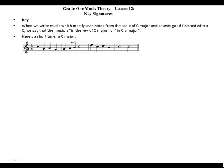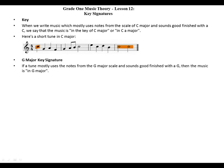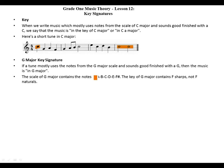Starting on C and finishing on C. G major key signature: if a tune mostly uses notes from the G major scale and sounds good finishing with a G, then the music is in G major. The scale of G major contains the notes G, A, B, C, D, E, F sharp.